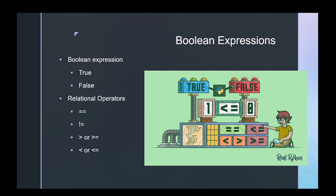We also have not-equal, which is an exclamation point and equal sign put together — so is one not equal to one? False. Then we have greater than and less than, along with greater than or equal to and less than or equal to. We can use greater than by itself or greater than accompanied by an equal sign, and the same goes for less than.